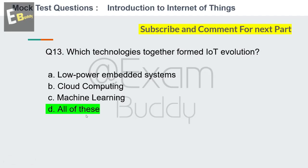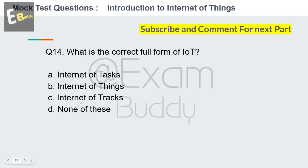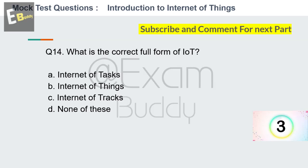Question number fourteen: what is the correct full form of IoT? Options: Internet of Tasks, Internet of Things, Internet of Tracks, none of these. The answer is B — Internet of Things.